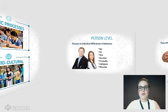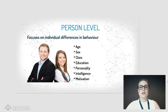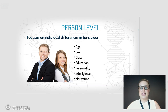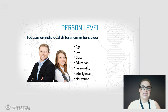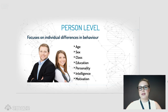The next level is the person level, which focuses on individual differences in people's behaviour. Factors like age, sex, class, intelligence or education, personality and motivation — all those things that make you different from the person next to you — are going to impact how you respond to a situation.